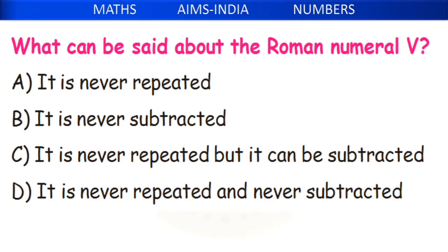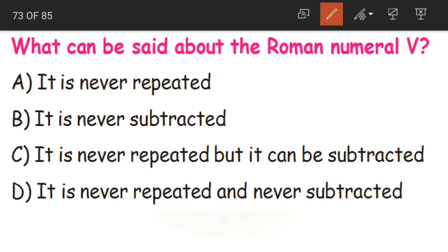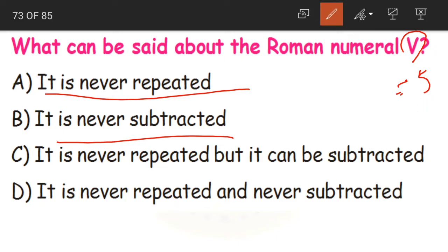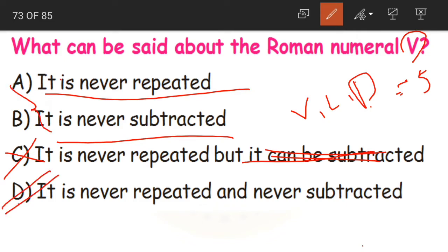Next: what can be said about the Roman numeral V? V equals 5. Option A: it is never repeated — yes, V can never be repeated. Option B: it is never subtracted — yes, V can never be subtracted. Option C says it is never repeated but can be subtracted — no, it cannot be subtracted, so C is wrong. Option D says it is never repeated and never subtracted — yes. Option D is correct, combining both A and B.